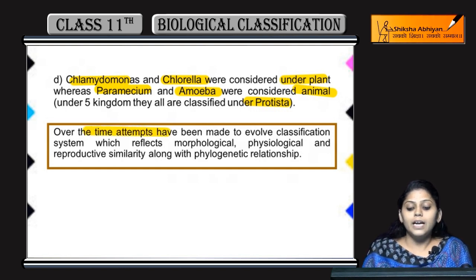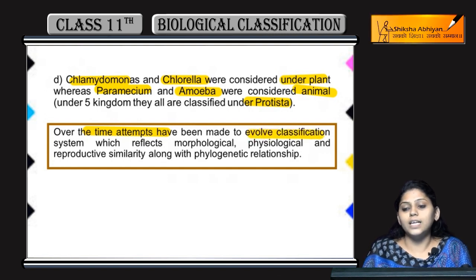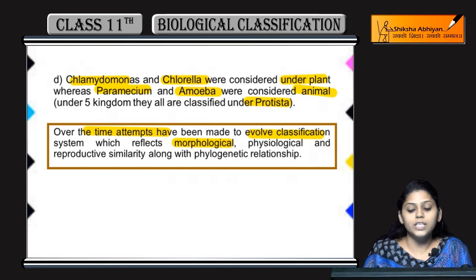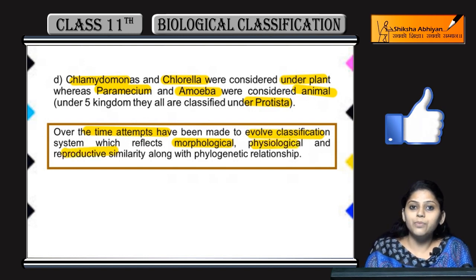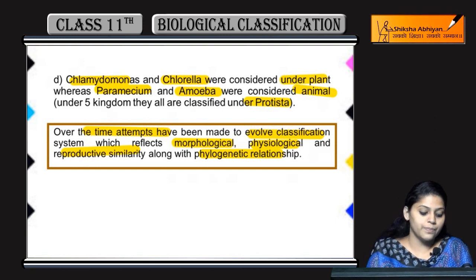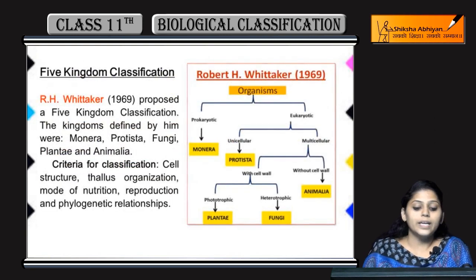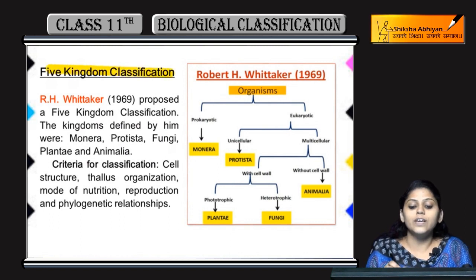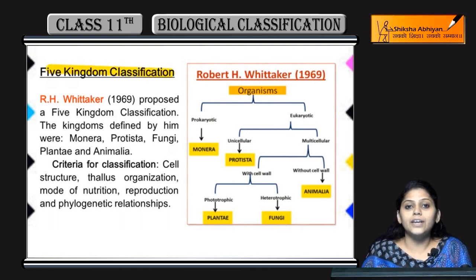There were various attempts made to evolve classification on the basis of morphology, physiology, reproductive similarity, and various phylogenetic or evolutionary relationships. And at last, it came — the five-kingdom system of classification.